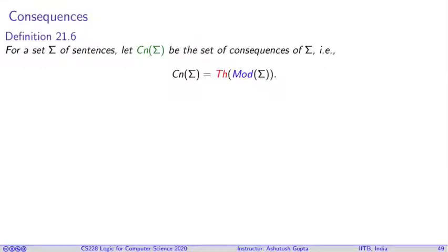Now we combine the definition theory of models and mod sigma in the following way which we call Cn of sigma or consequence of sigma. I give you a set of sentences, you apply mod, it gives you a set of structures, and then you apply theory on it, then you get the consequences.